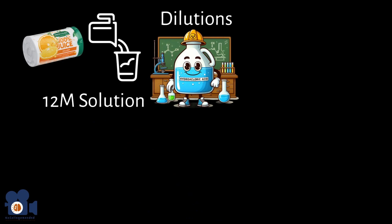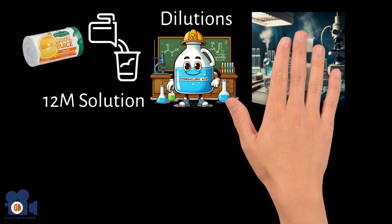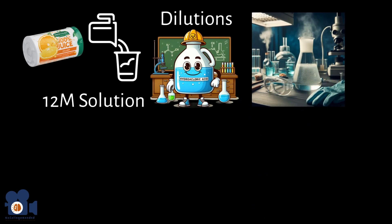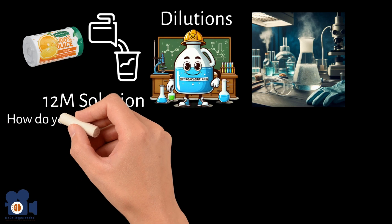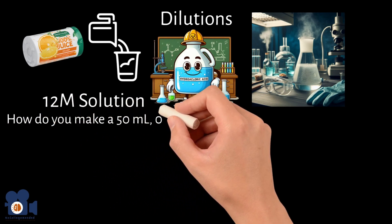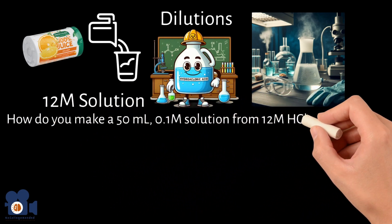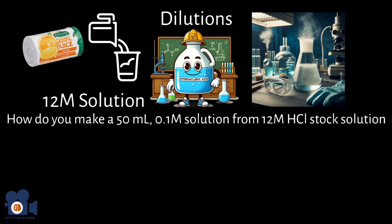You'd almost never use it in that concentration. One of the reasons for this is that it often gives off fumes of HCl gas that is extremely corrosive and dangerous. A common molarity used in chemical synthesis is 0.1 molar. So how do you make 50 milliliters of a 0.1 molar solution from a 12 molar HCl stock solution?